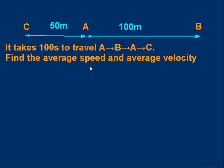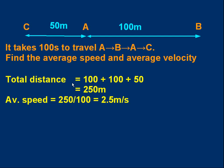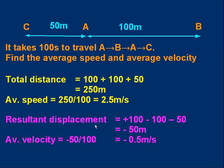Well, I hope you've tried that. The average speed is fairly straightforward. The total distance you've moved is 100, then another 150 — 250 metres. Distance is always positive; we don't care what direction we're going. The average speed is therefore 250 metres over 100 seconds, which is 2.5 metres per second. Now let's do the average velocity. We start by working out the resultant displacement, and we can add the three separate ones together: plus 100 metres (A to B), minus 100 metres (B to A), then minus 50 metres (A to C), giving us minus 50 metres.